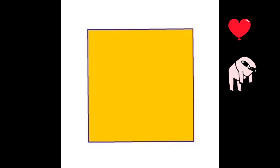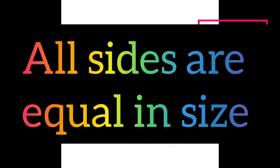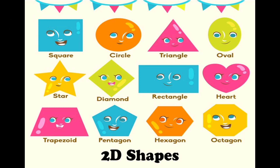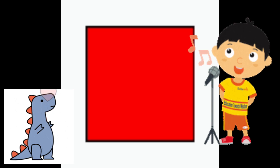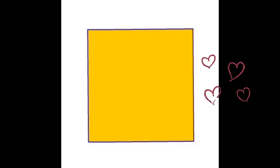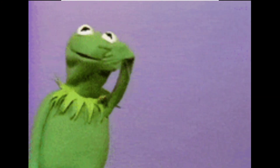This is square. All sides are equal, this is square. It has 4 equal sides. It has 4 right angles, this is square. All sides are equal, this is square.